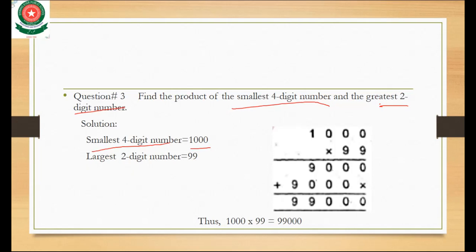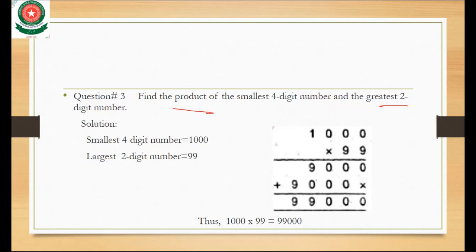The smallest four-digit number is 1000 because going below 1000 gives a three-digit number. The greatest two-digit number is 99, because 100 is a three-digit number. So we multiply 1000 times 99. First multiply 9 times 1000 to get 9000, then add — the answer 99,000 comes.